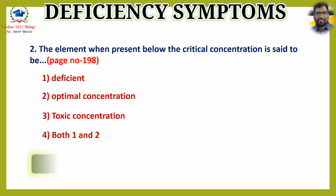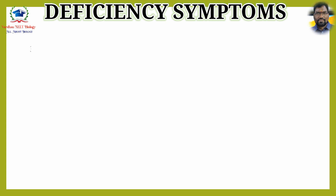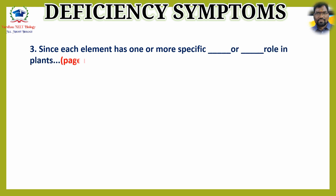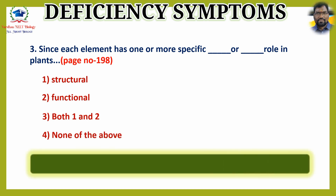Question 3: Since each element has one or more specific blank or blank role in plants — options are 1) structural, 2) functional, 3) both 1 and 2, 4) none of the above. The answer is option 3: both 1 and 2.